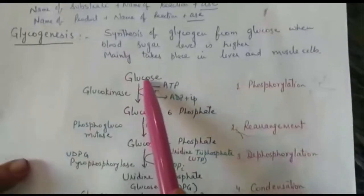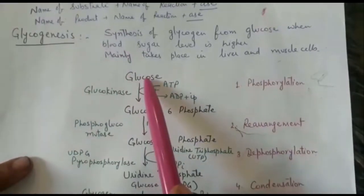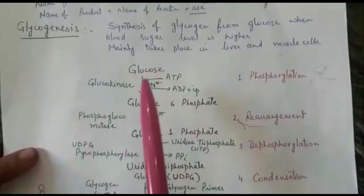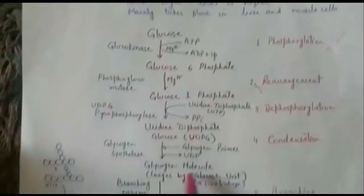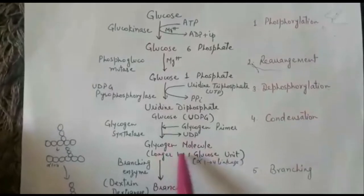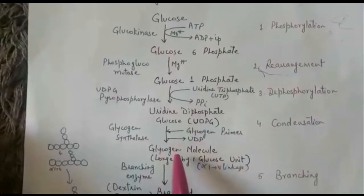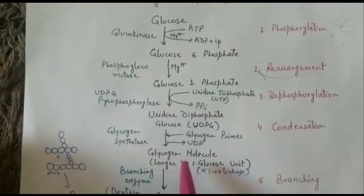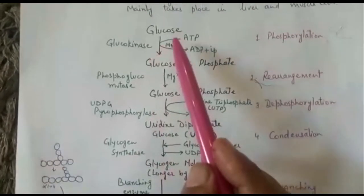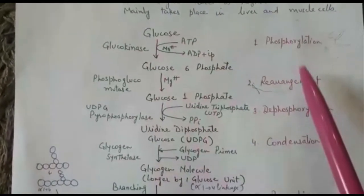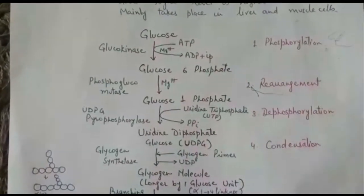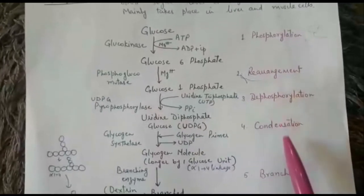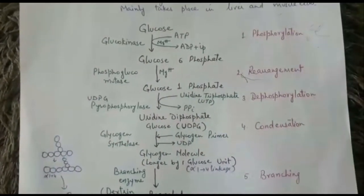Naturally, since this is a synthesis of glycogen from glucose, the process mainly requires a glycogen primer. A glycogen primer means a very short glycogen molecule. This process is completed in five steps: phosphorylation, rearrangement, dephosphorylation, condensation, and branching.